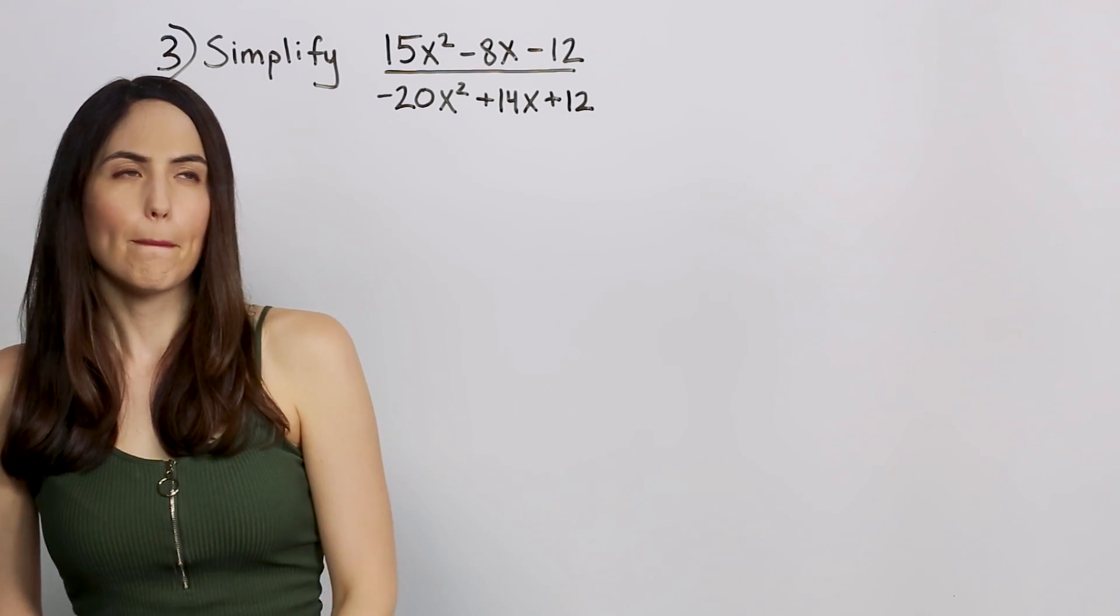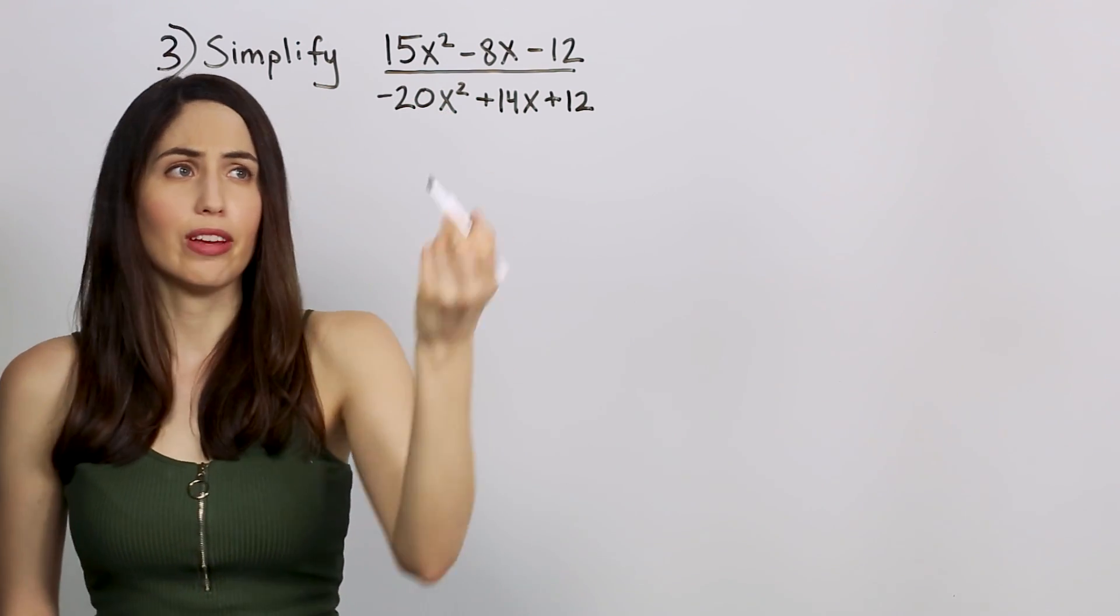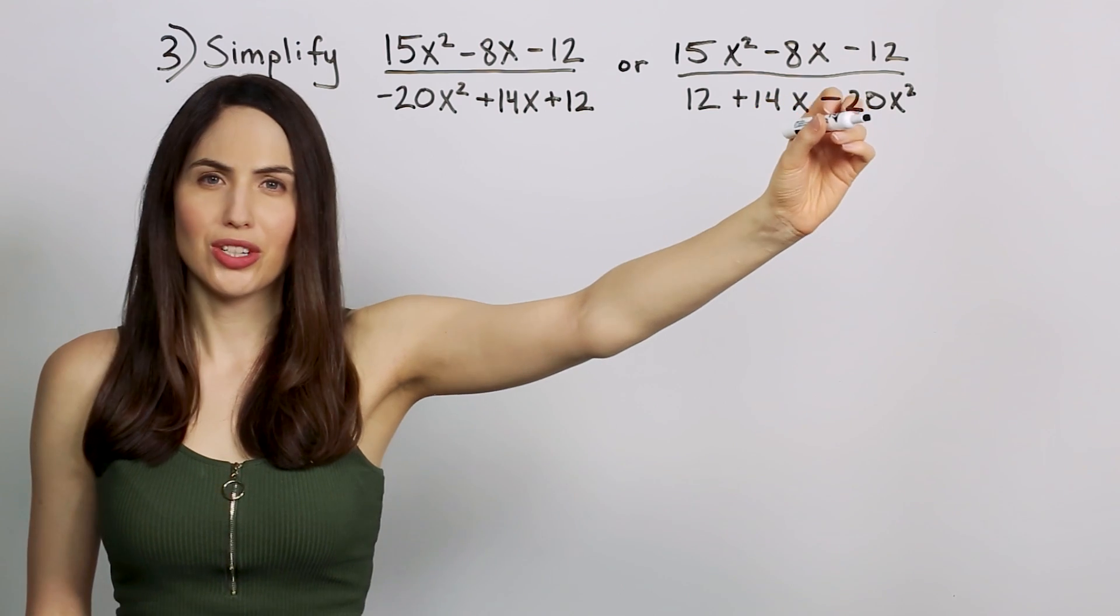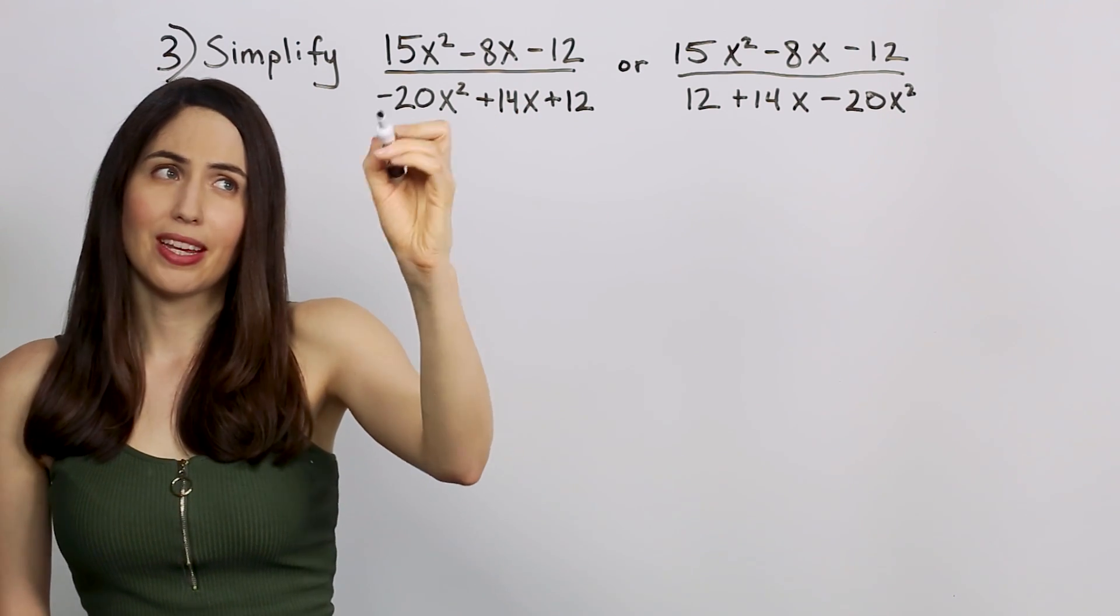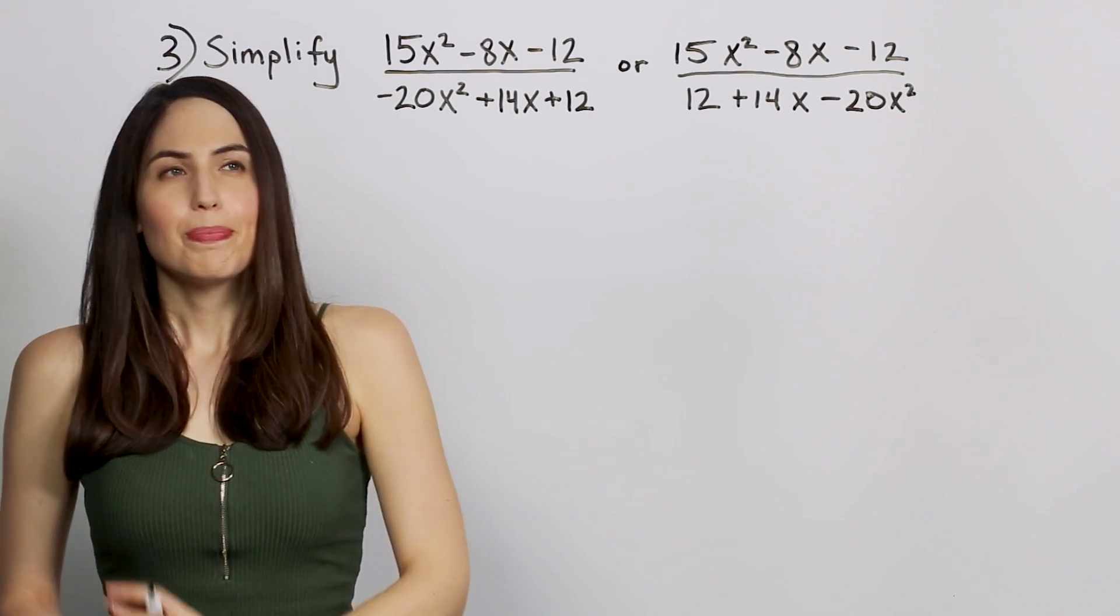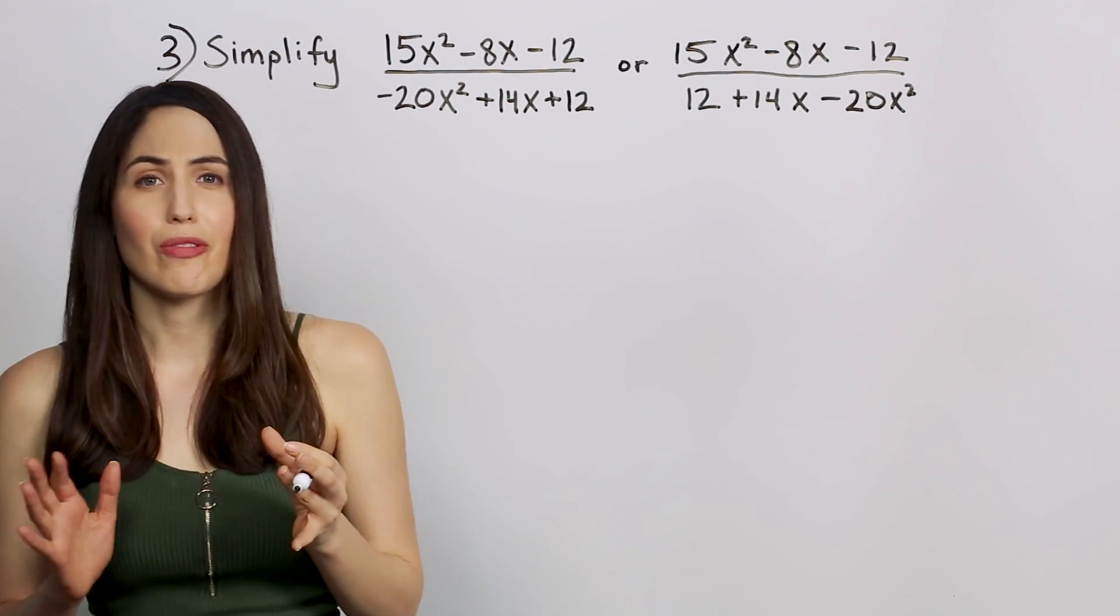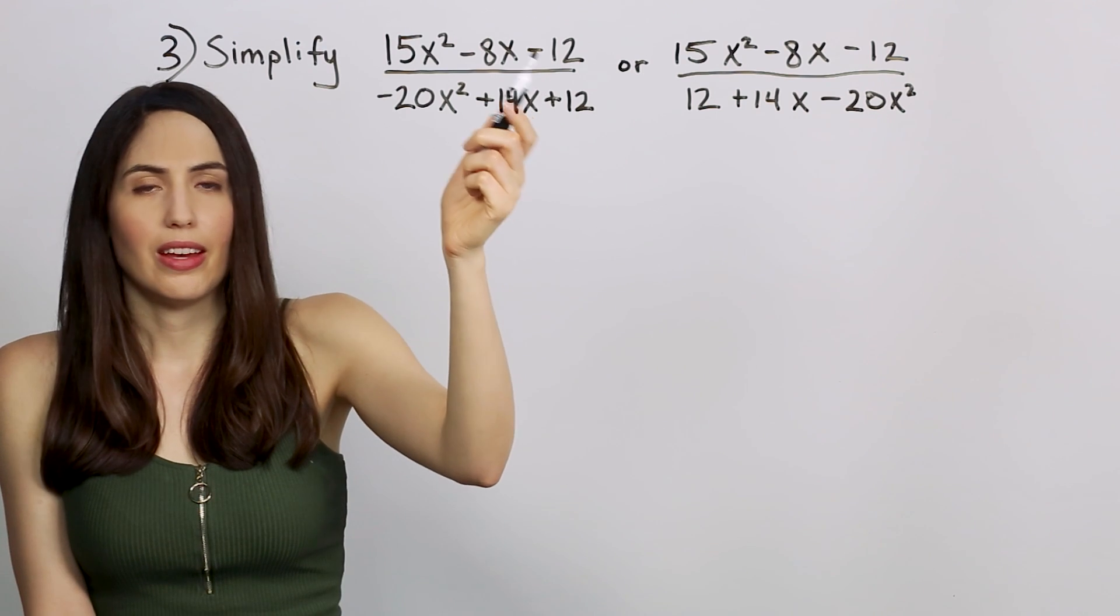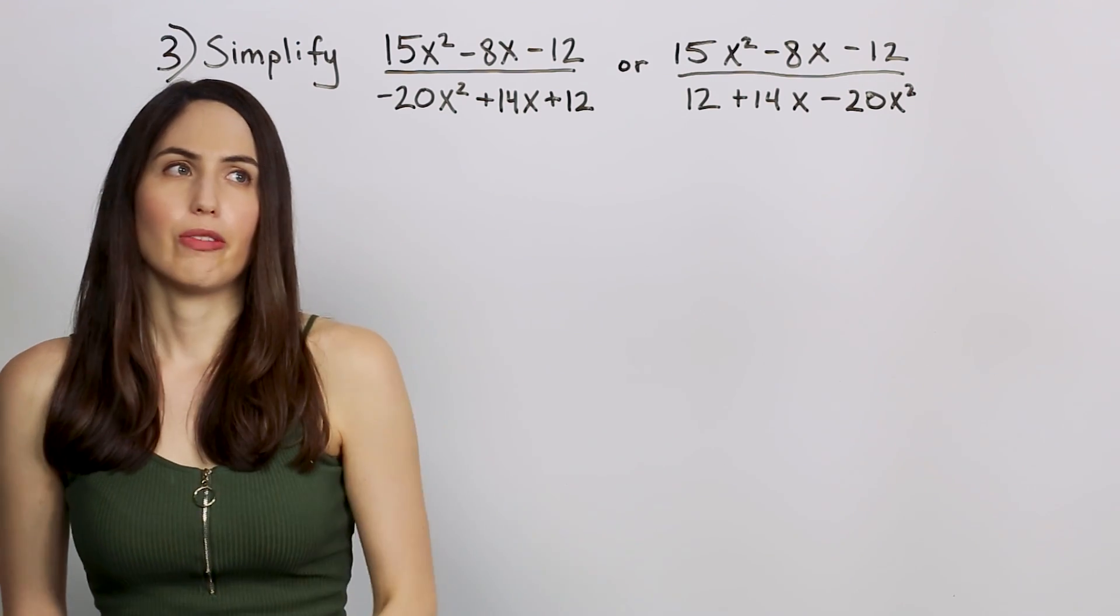Here's a slightly harder kind if you have bigger numbers for your coefficient or you have a negative number in your coefficient. You might see it written like this with subtraction of an x squared term. It's the same thing. Either way, it's probably better to rewrite it so it looks like this with the x squared term first and then in descending order of the degree power. But with these larger coefficients, something like 15x squared, 20x squared, first thing to do is check to see if there's a number you can factor out from all the terms on the top and on the bottom. On the top, it really looks like there should be something that is common to all these other than 1. There's not. But in the bottom there is. We can pull out a 2 from all of those terms.